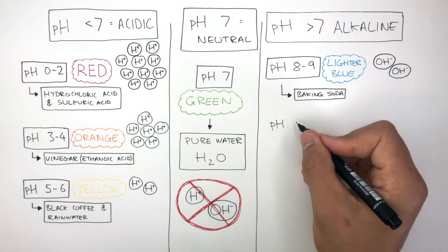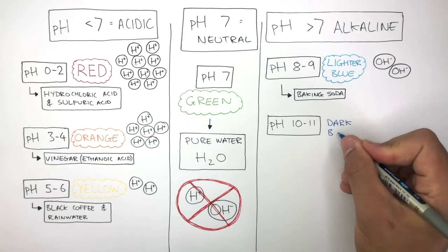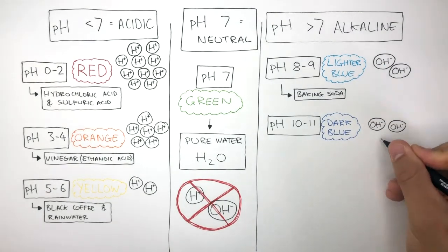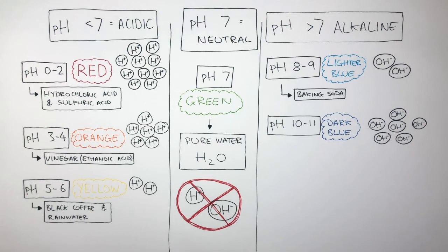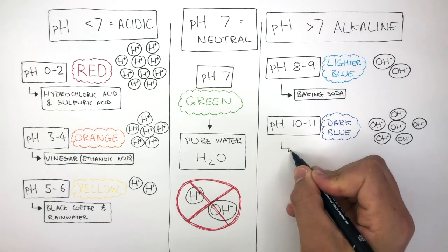A pH of 10 to 11 causes Universal Indicator solution to be dark blue and will have more hydroxide ions in solution compared to a pH of 8 to 9. An example of a pH of 10 to 11 could be washing powder.